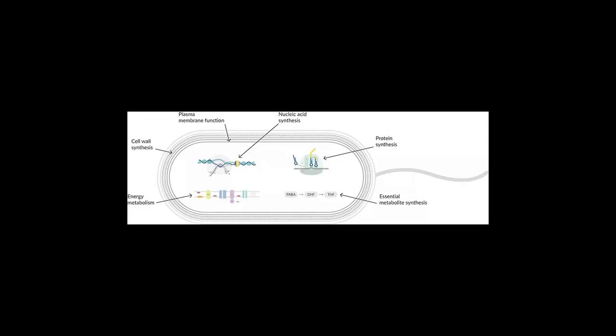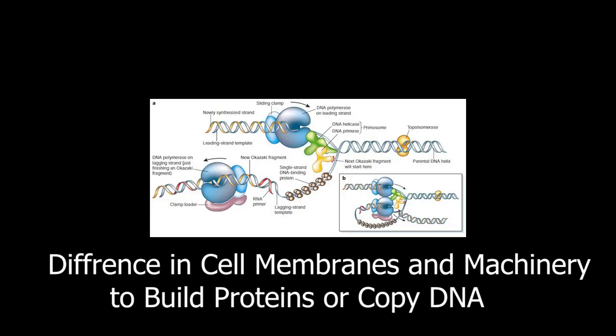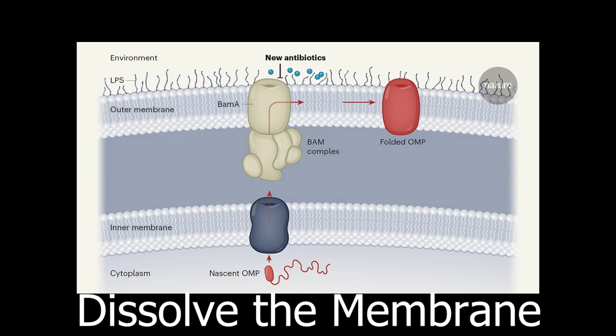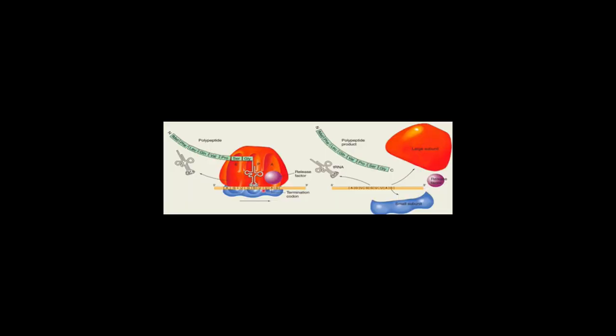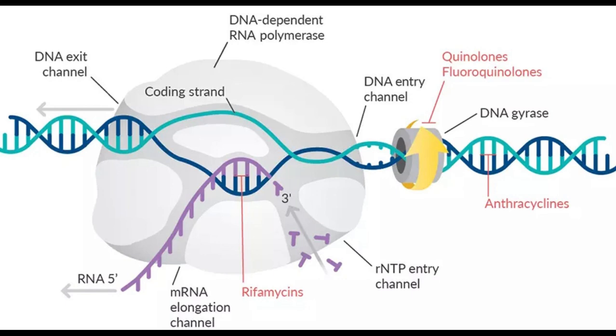The antibiotic penicillin works by keeping a bacterium from building a cell wall. Bacteria and human cells also differ in the structure of their cell membranes and the machinery they use to build proteins or copy DNA. Some antibiotics dissolve the membrane of just bacterial cells. Others affect protein building or DNA copying machinery that is specific to bacteria.